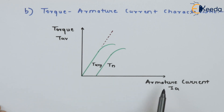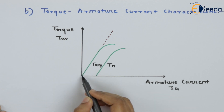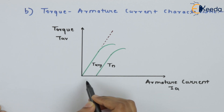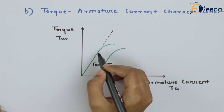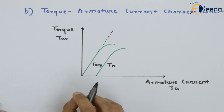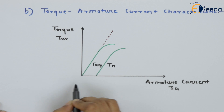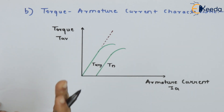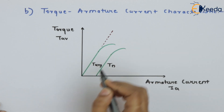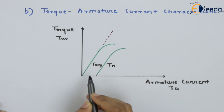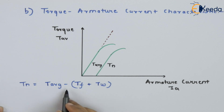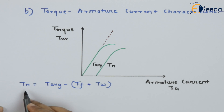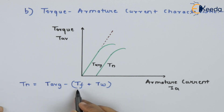The figure shows the torque versus armature current characteristic of DC shunt motor. Initially at low values of armature current, as current increases, torque increases because we have neglected armature reaction and flux is constant, so torque is directly proportional to armature current. Here, Tn is the net torque and T_avg is the gross torque. The formula is: Tn = T_avg − (Tf + Tw), where Tf is the friction torque and Tw is the windage torque.